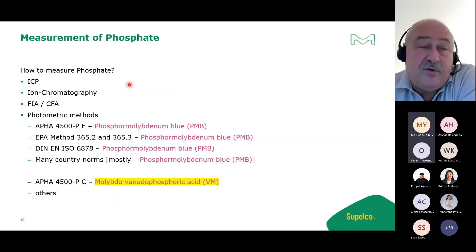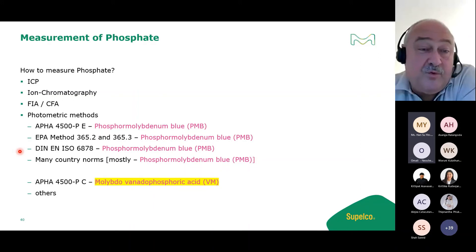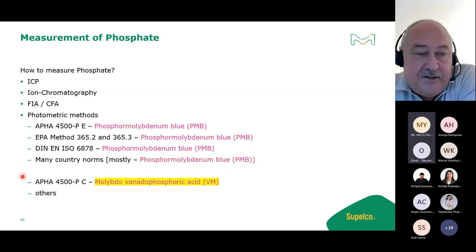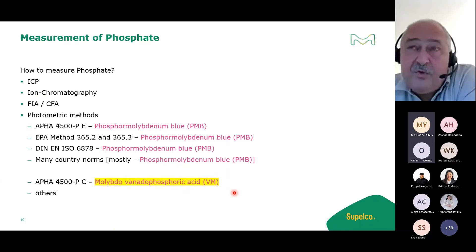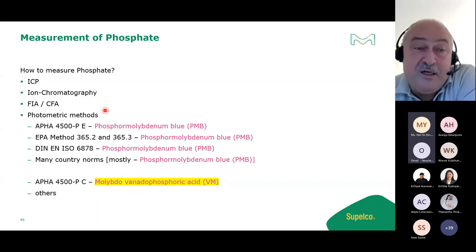For phosphate measurement, various photometric methods exist alongside ICP and flow injection analyzers. The APHA, US EPA, and ISO methods all use the phosphomolybdenum blue method - as do most local standards. A separate APHA method using molybdophosphoric acid is specifically for hydrolyzable phosphate in cooling and boiler water, and gives higher results due to higher sulfuric acid content - not used for drinking water or wastewater.